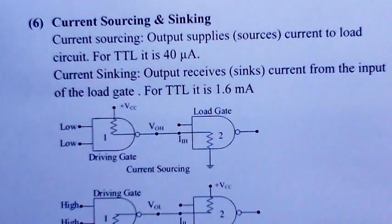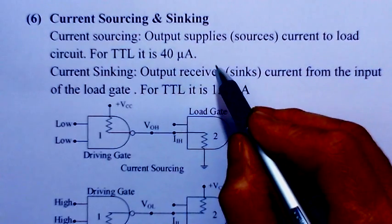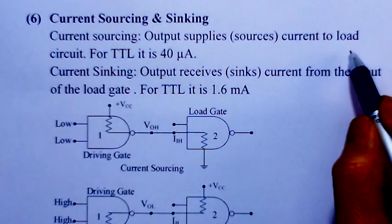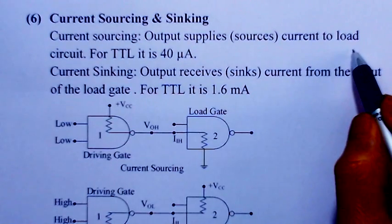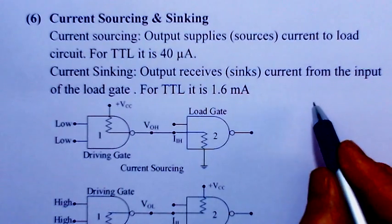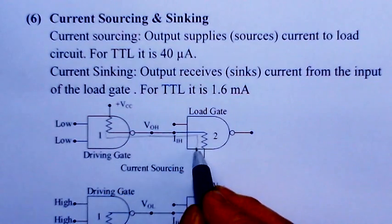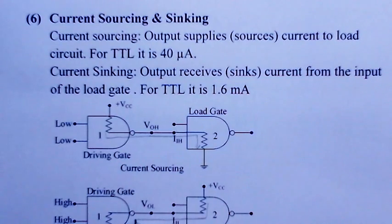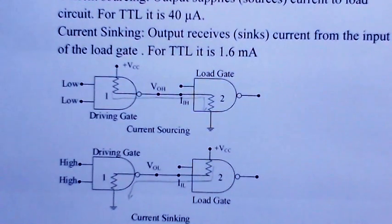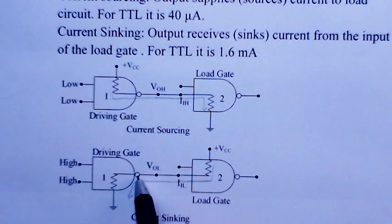Current sourcing means when a particular gate or output supplies current to the load circuit — it is sourcing the current. When it receives current, it is said to be sinking the current. This is demonstrated through a NAND gate: if both inputs are high, the output will be low, and the low output will sink the current from the load gates.